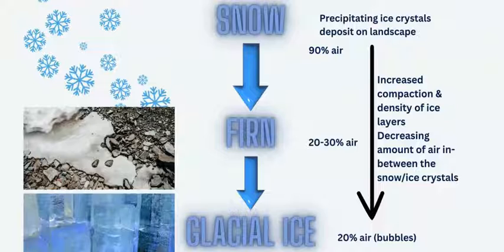We're essentially pushing the air out of the snow pack and increasing its density. Finally, to make glacial ice — which takes between five to ten years — there is more recrystallization and increase in density. This is found towards the head of the glacier, before it starts to flow downhill past the equilibrium line into the ablation zone. Glacial ice is extremely compact and dense, containing about 20% air, mostly as bubbles.